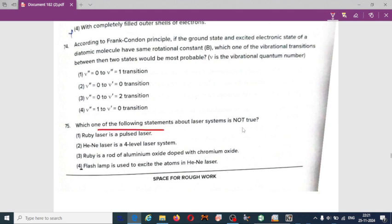Which one of the following statements about laser system is not true? Ruby laser is a pulse laser - this is correct. Neodymium neon laser is a four level energy system. Ruby is the rod of aluminum oxide doped with chromium. Then flash lamp - this one may not be correct, it is used to excite the atoms.